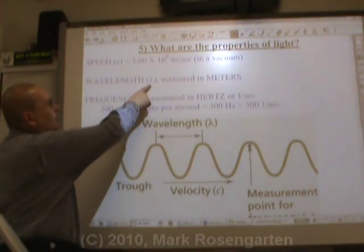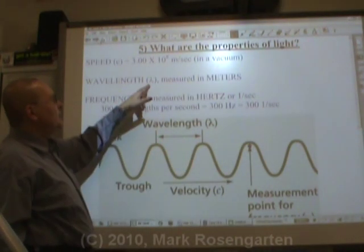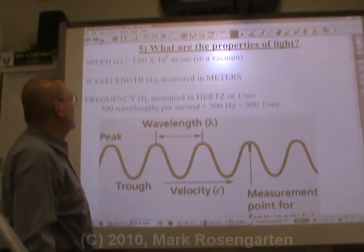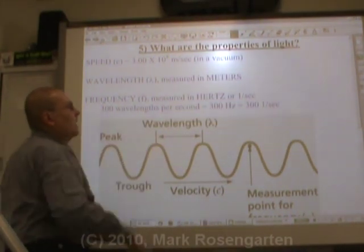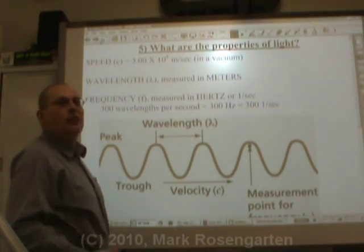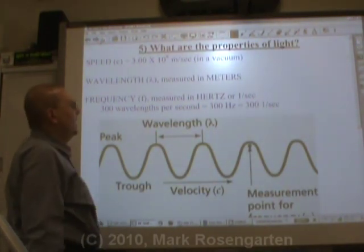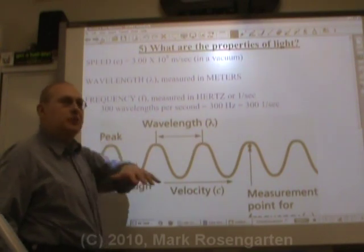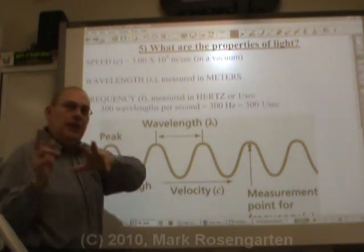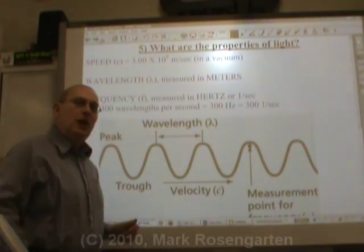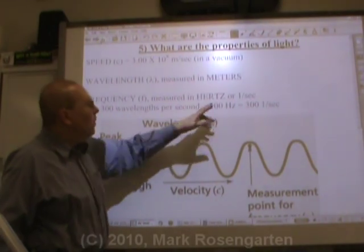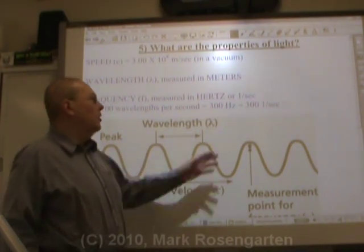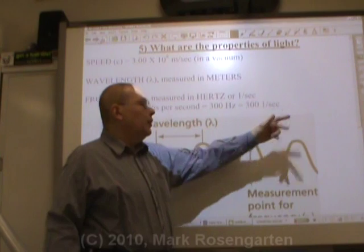Wavelength, which is signified by the Greek letter lowercase lambda, is measured in meters. Frequency is measured in either hertz or per second — 1 over second. 300 wavelengths per second is called 300 hertz. In other words, if you're standing there and 300 wavelengths pass you every single second, that would be called 300 hertz, or 300 per second.